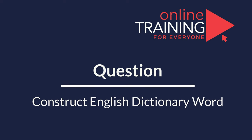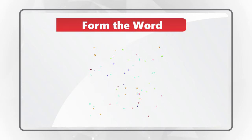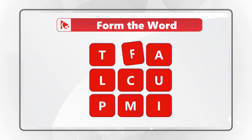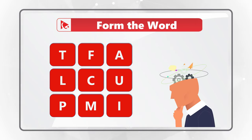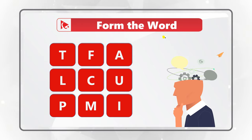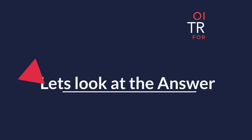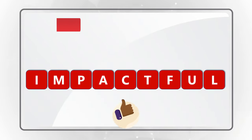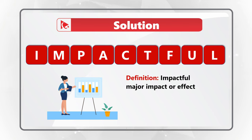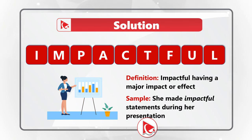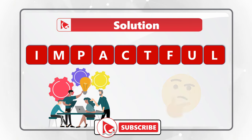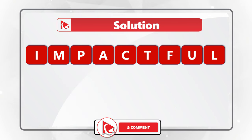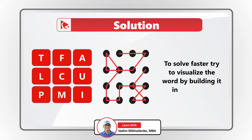This question truly tests your knowledge of the English dictionary. You need to form a word using all the letters only once. There are nine letters on the screen: T, F, A, L, C, U, P, M, I. Give yourself a little bit of time — it's a very complex nine-letter word. Consider pausing the video to get to the correct answer. The correct word is impactful, and the definition of impactful is having a major impact or effect. A sample usage might be: during her presentation, she made impactful statements.